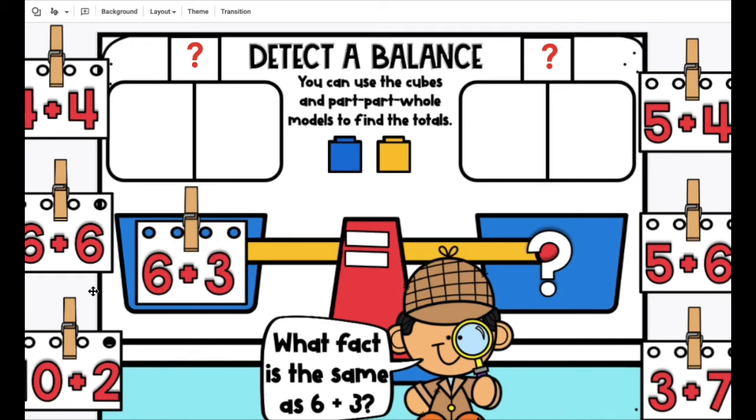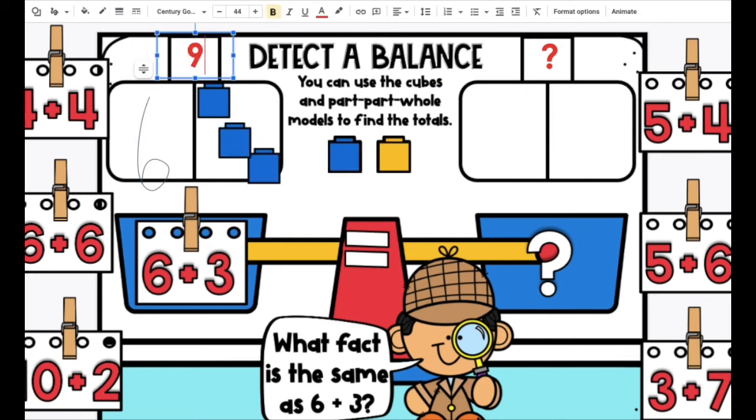So we first have to find the whole. 6 plus 3. 6. Let's count on. 7, 8, 9. So both sides have to equal 9.